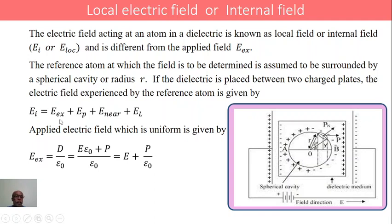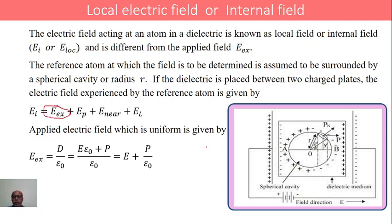We have different electric fields. Number one: Ex, the external electric field, which is due to the applied field. Ep is due to the polarization of the dielectric material — due to the charges on the outer surface of the dielectric material, it gives rise to an electric field known as Ep.